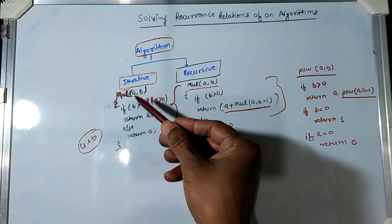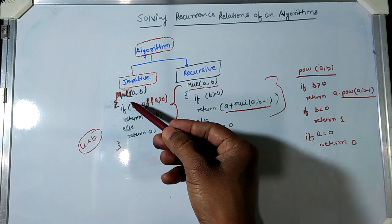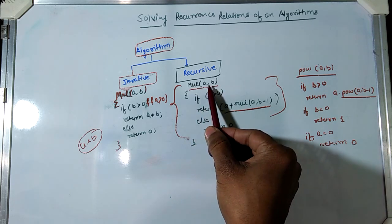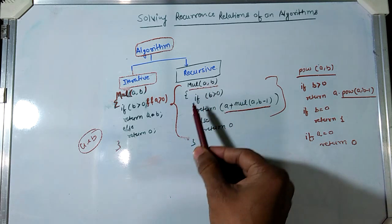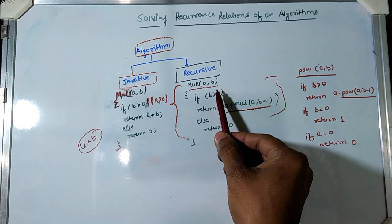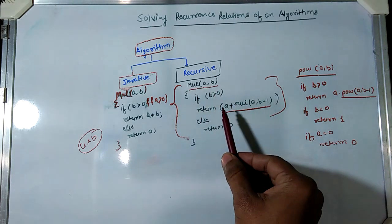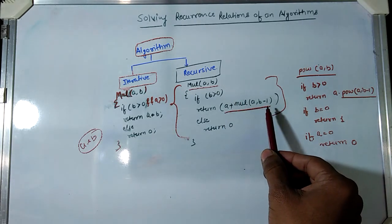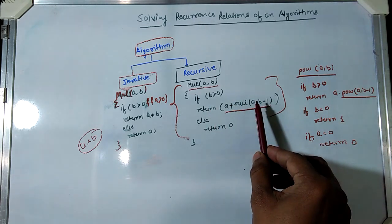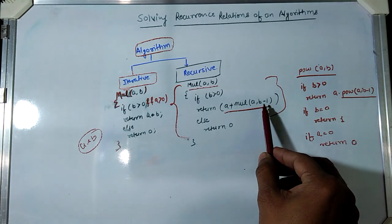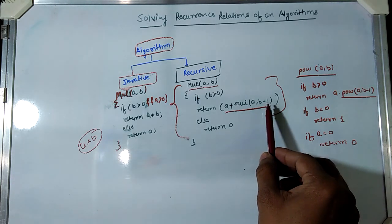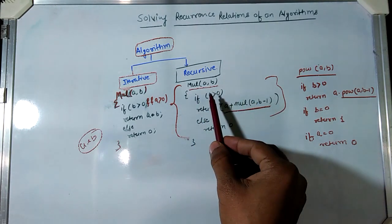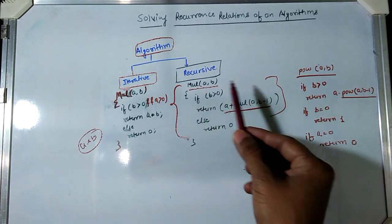This is the iterative procedure to solve a multiplication problem. Now I convert the same procedure into a recursive one. With the same function taking inputs a and b, if b is greater than zero then it returns a plus multiplication of a comma b minus one — passing input a and the modified input b minus one to the same function.